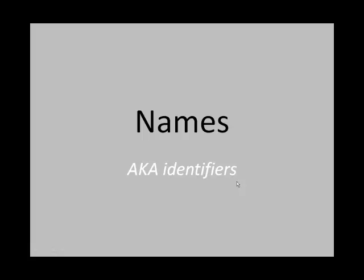Hi. In this screencast, I'm going to briefly explain some of the rules that you need to follow when naming identifiers in your program. Names, also known as identifiers, are very important in programming. Anytime that we refer to an image or a sound or a file on our hard drive, or define a function, we have to give it a name. Here are briefly some of the rules that you need to keep in mind when you're choosing names in your program.